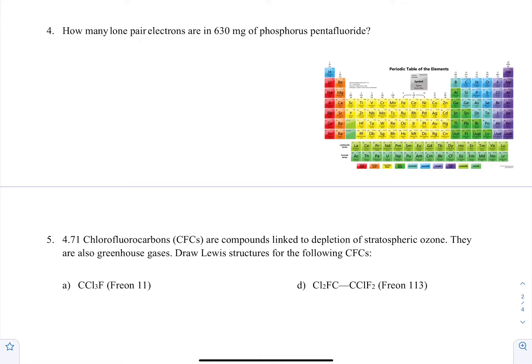Hey guys, welcome back to Cougar Chem Tutoring. I'm Austin. I'll be running through part two of problem set 11 Lewis structures. So number four: how many lone pair electrons are in 630 milligrams of phosphorus pentafluoride?